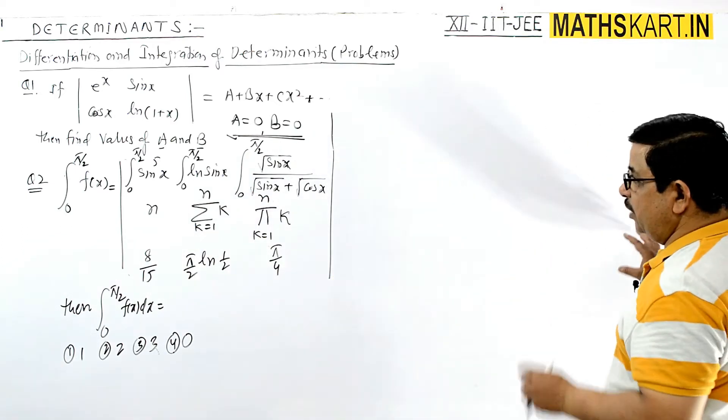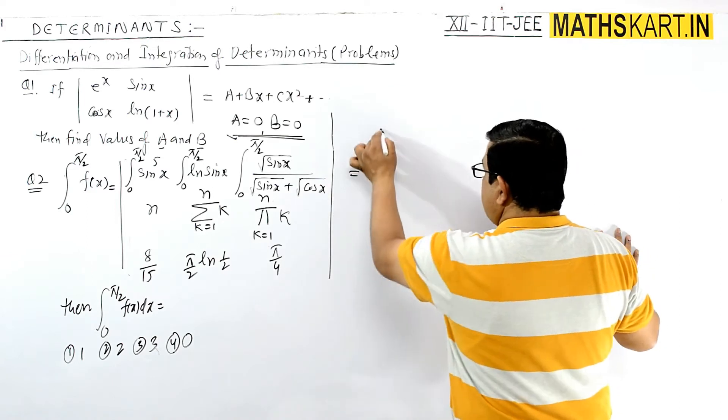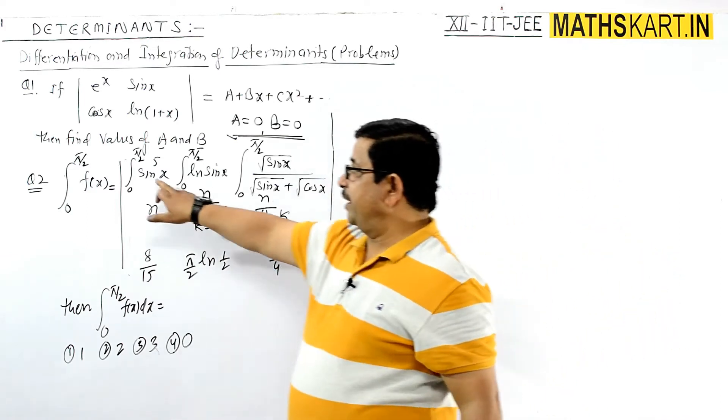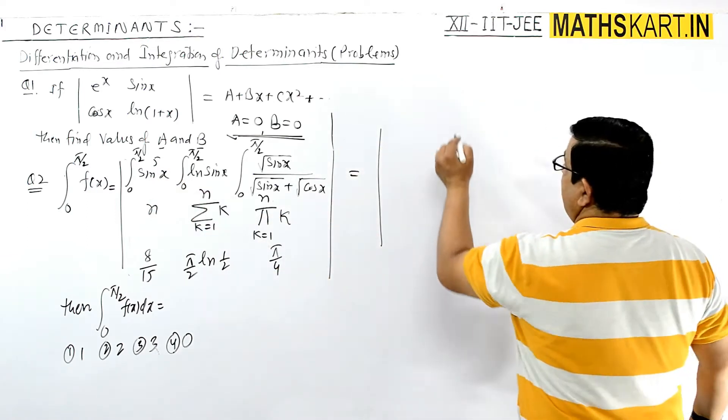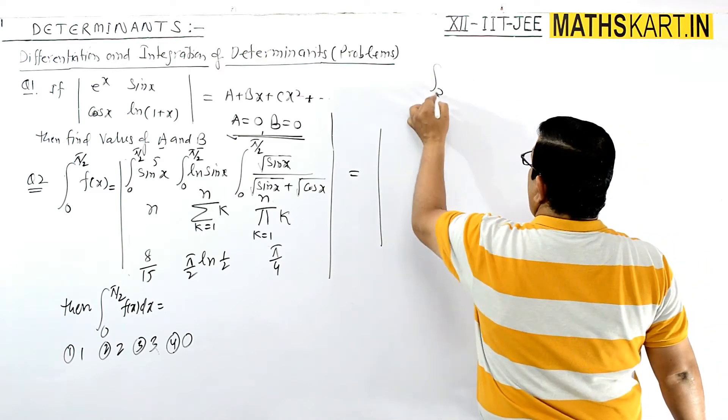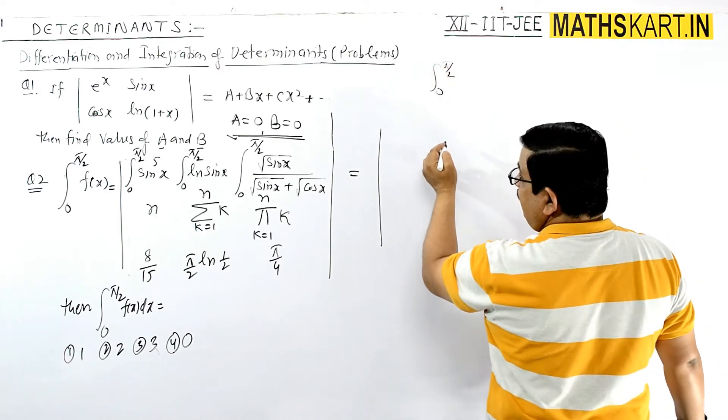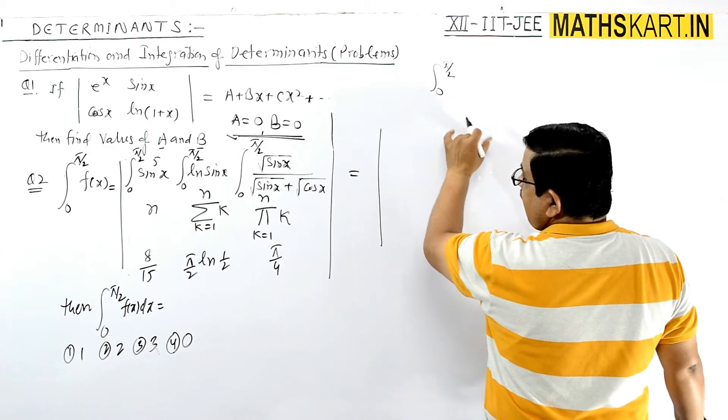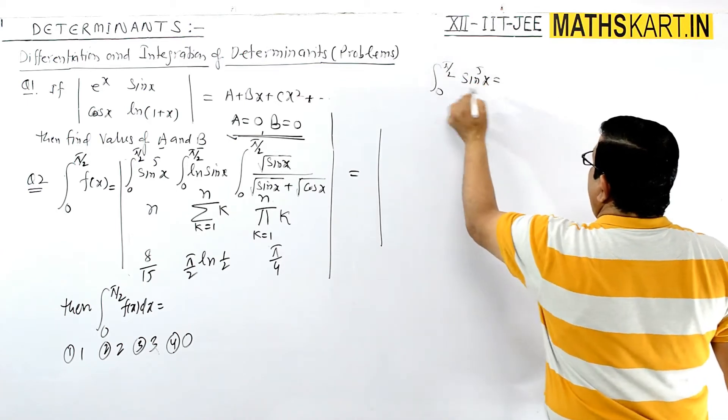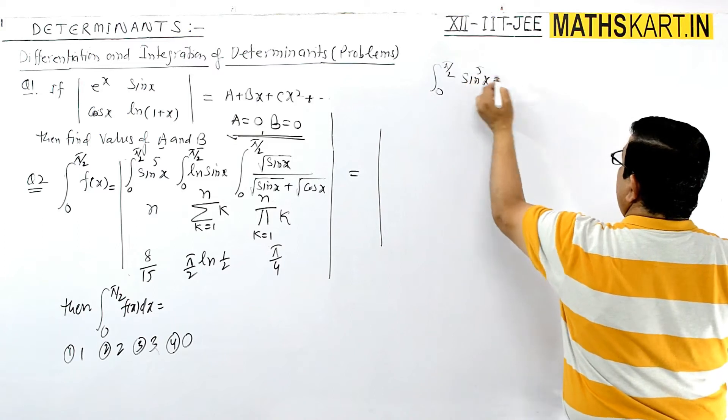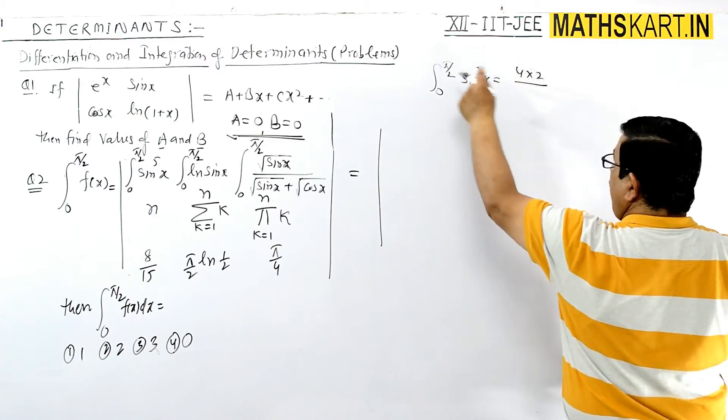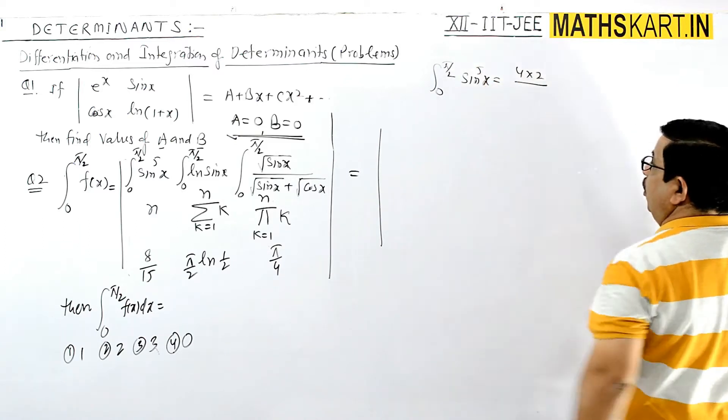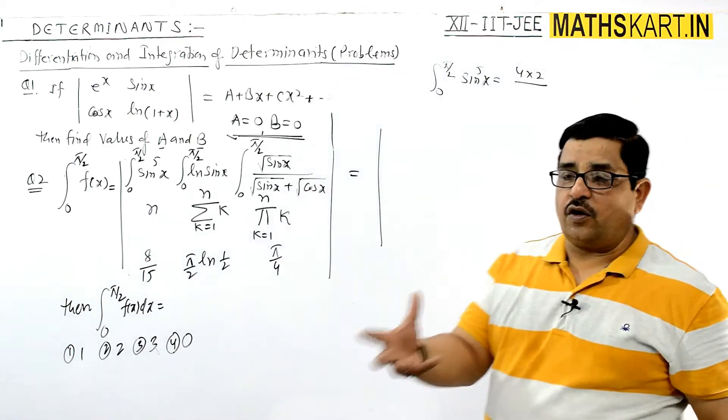Now look at this, what happens is that these values are sin 5x. This is the formula that we have seen as 0 to pi by 2, and this is the sin 5x. So directly we have to find out 5 minus 1, 4 into 2, and we have to find out the same number. But if it is odd, if n is the odd number, then n minus 1, n minus 3.